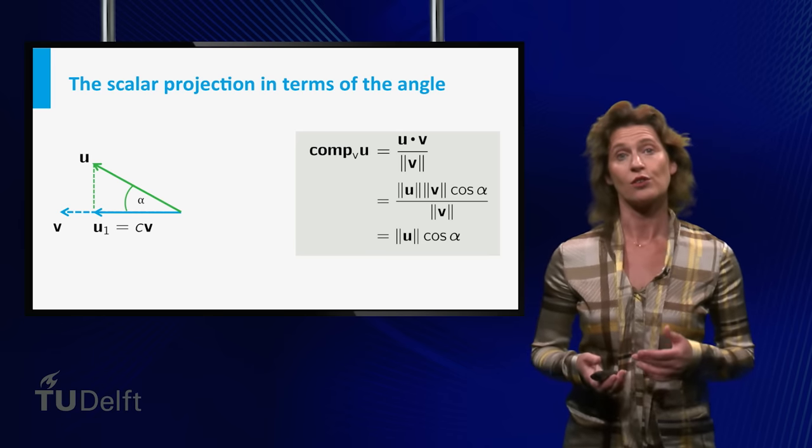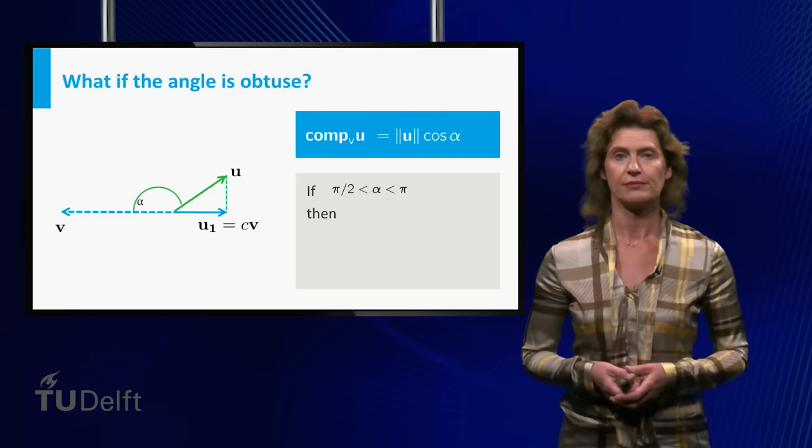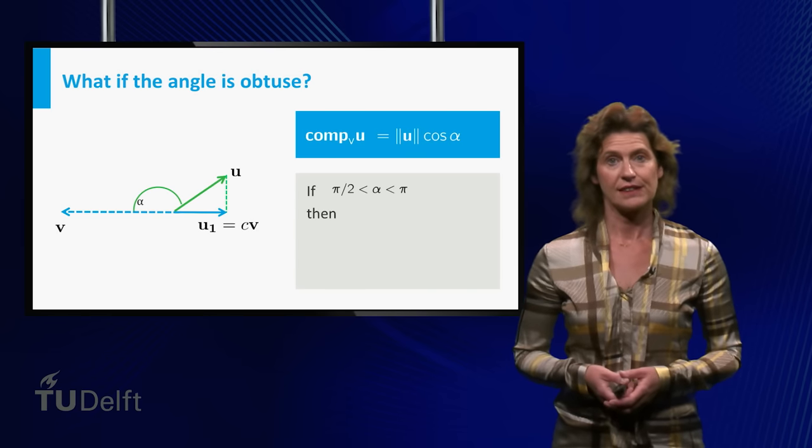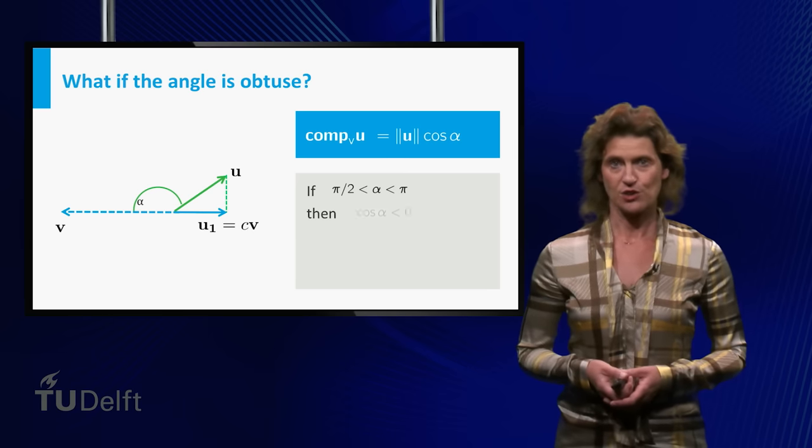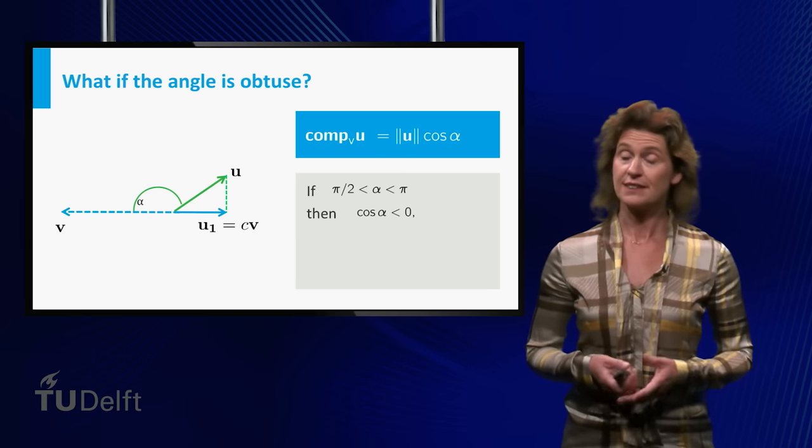This equals the length of u times the cosine of alpha. Indeed, if the angle is obtuse, that is greater than pi over 2, the cosine is smaller than 0, making C negative.